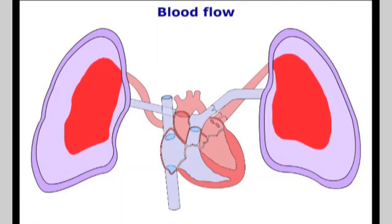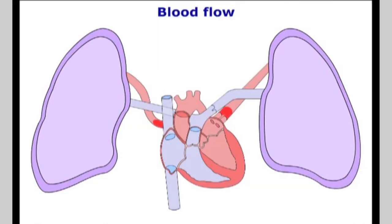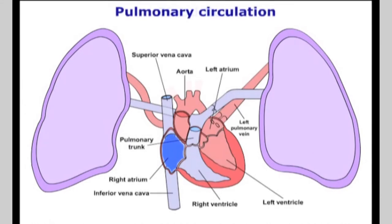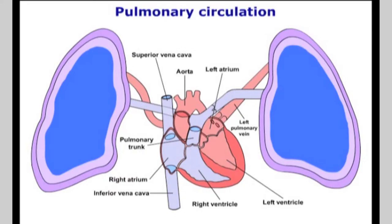The heart is a double pumping chamber. The right atrium and ventricle are separated by the tricuspid valve. A semilunar valve is situated at the exit of the right ventricle leading onto the pulmonary trunk or artery. Blood from here goes on to supply the pulmonary circulation with deoxygenated blood.